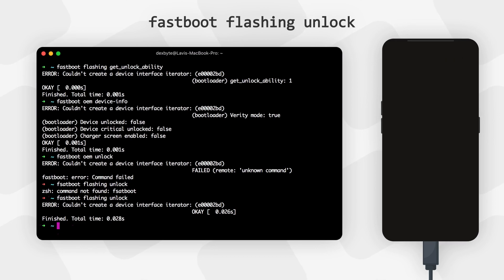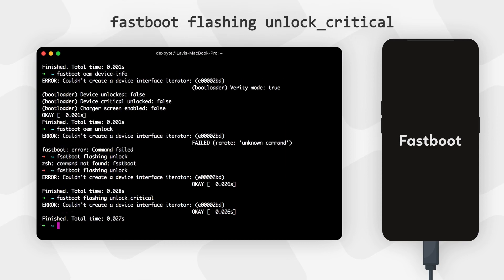As we saw in the example, your device may also have an extra critical lock layer. For that, boot your phone into bootloader mode again and type 'fastboot flashing unlock_critical', then follow the same unlock process as before.